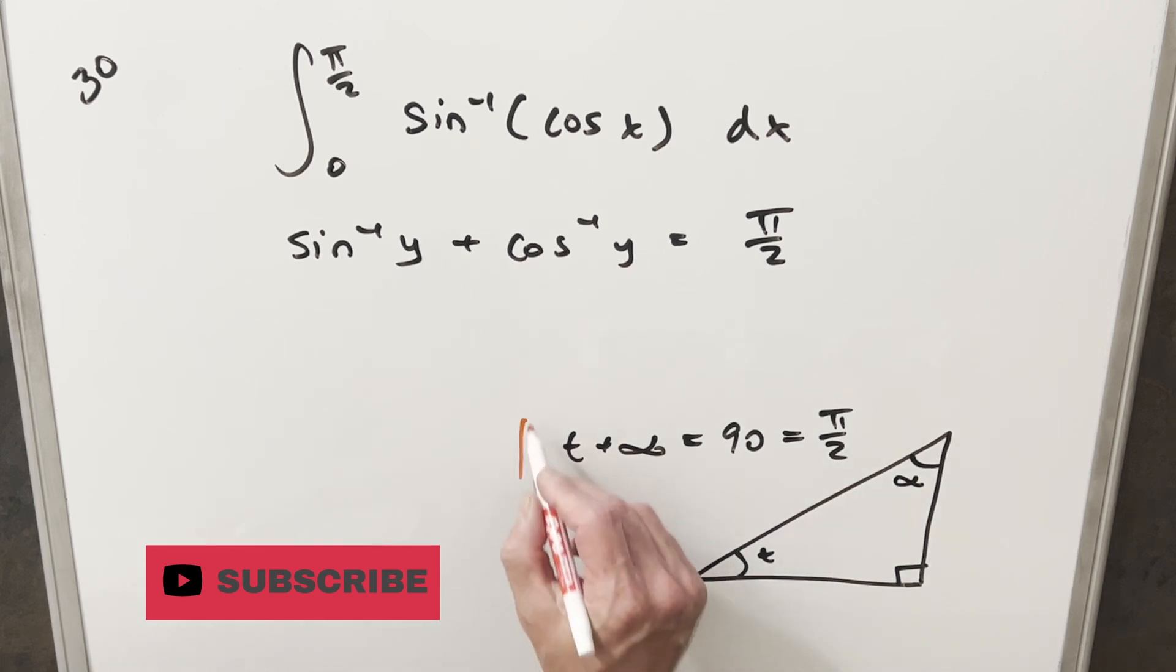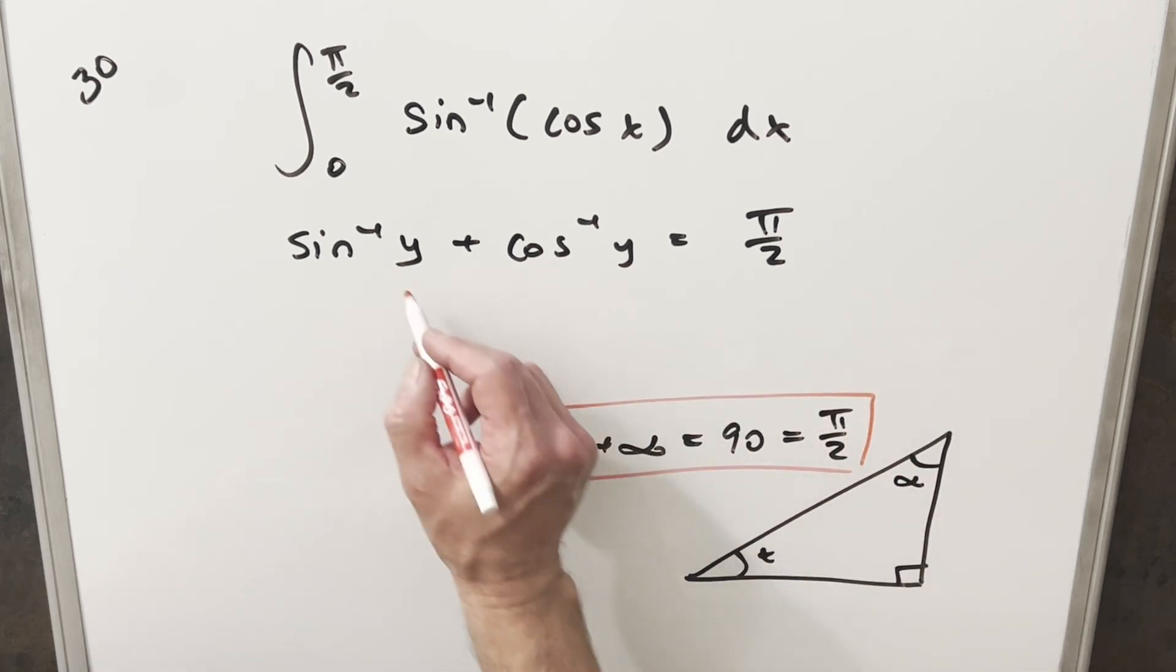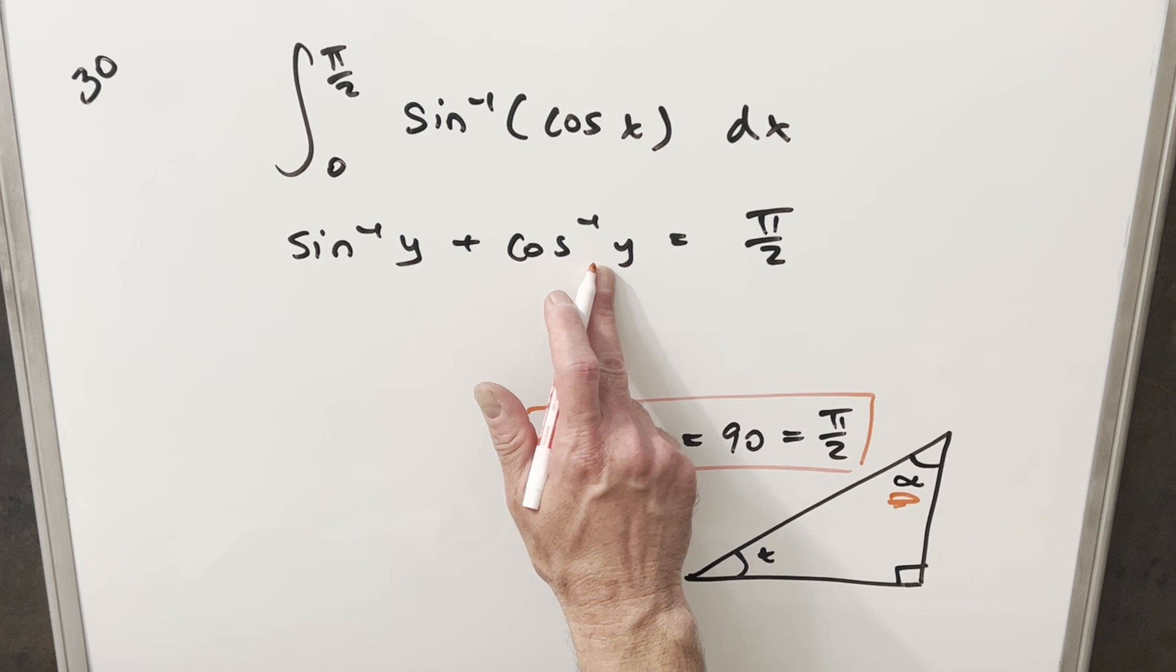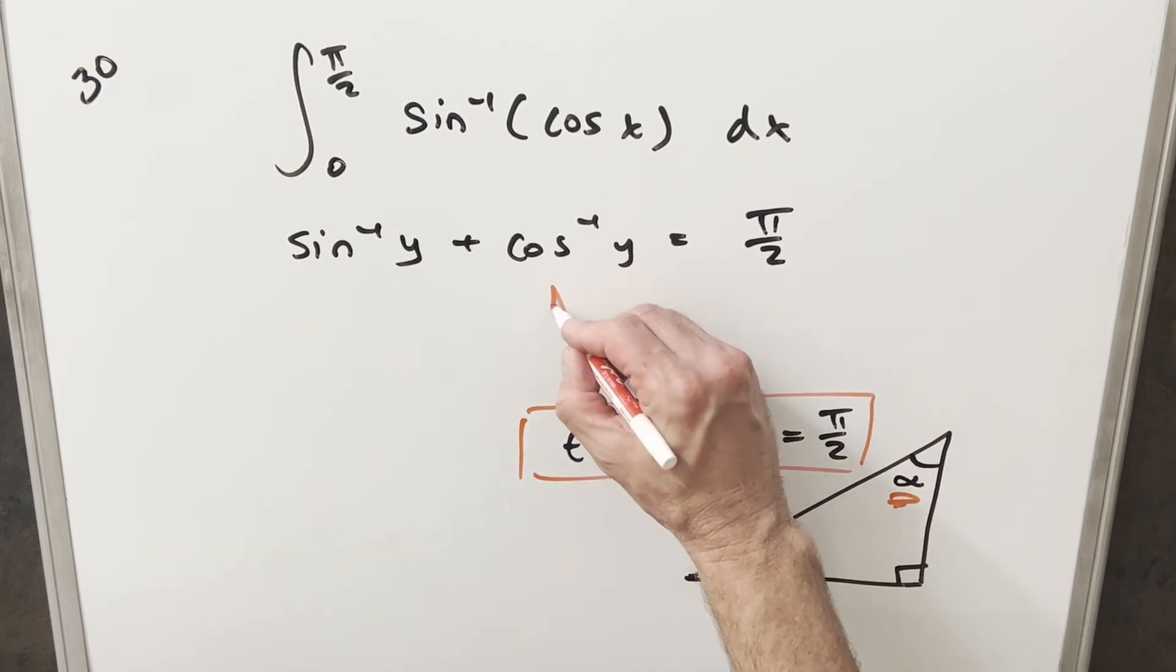This right here is not quite the same thing as this formula. If you set arcsin of y equal to θ, and then you fill out your triangle and solve for α, you find that α is arccos of y. So with the triangle you can quickly go from here to here.